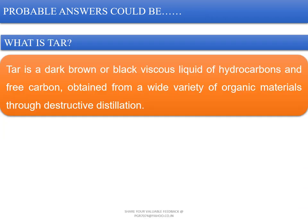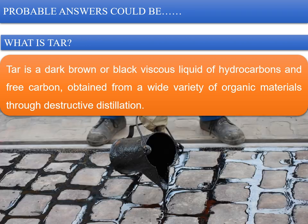Tar is a dark brown or black viscous liquid of hydrocarbons and free carbons obtained from a wide variety of organic materials through destructive distillation.